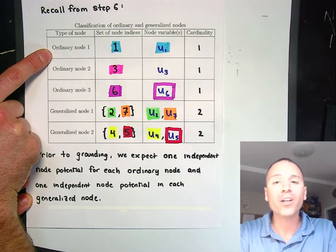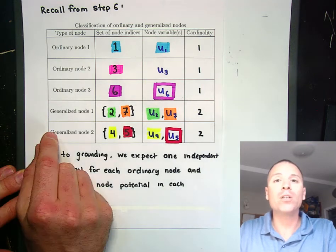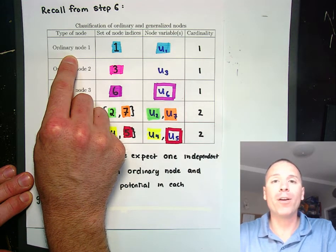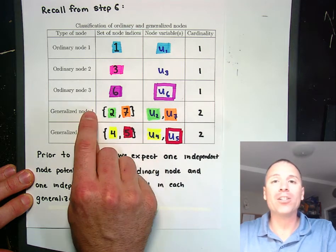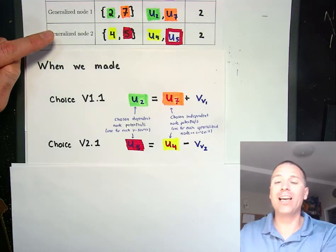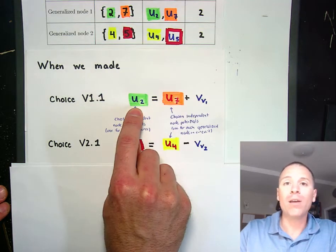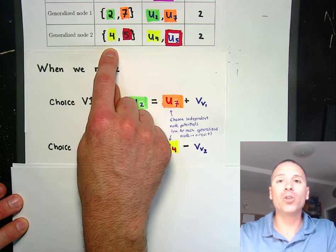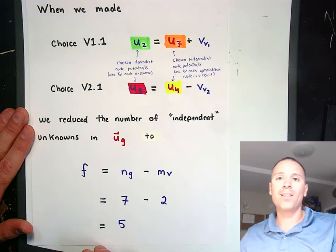That was the point of classifying what we called ordinary nodes — nodes to which no voltage sources were connected — and generalized nodes, which are clusters or sets of nodes connected by paths of voltage sources. For each ordinary node there is one independent node potential variable. For each generalized node there is only one independent node potential; all other nodes in that generalized node are dependent on that chosen independent node. In this example we had two separate generalized nodes. We made an arbitrary choice to call node u7 independent so that u2 can be calculated as a function of u7 and voltage source 1, and we chose u4 to be the independent node potential in generalized node 2 so that dependent node 5 potential is a function of node 4 potential.